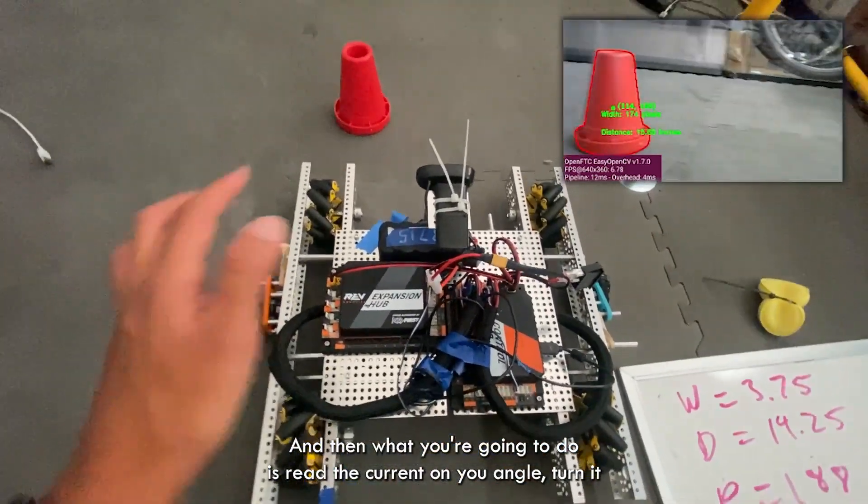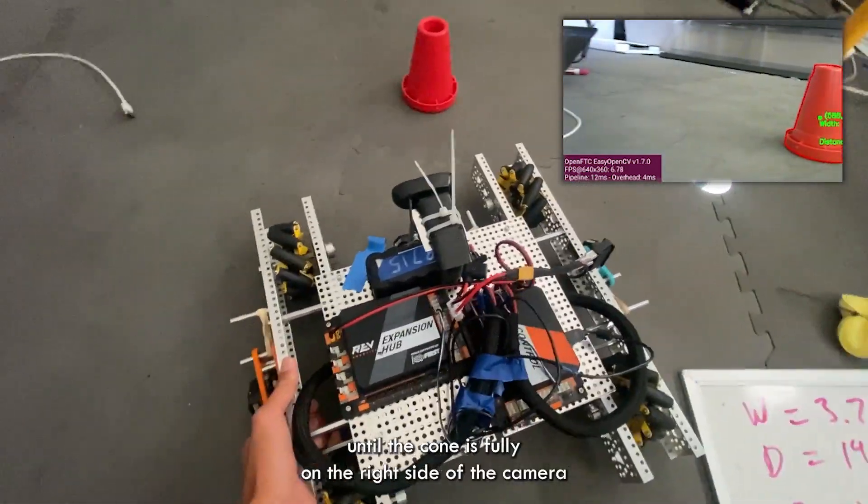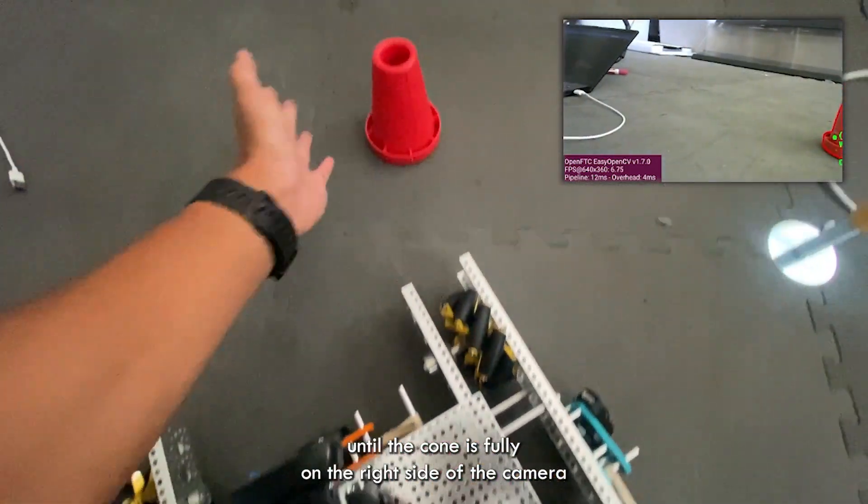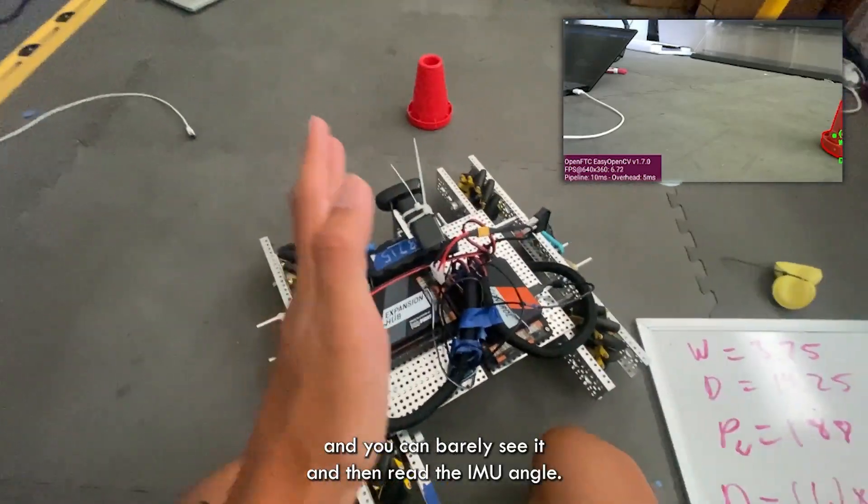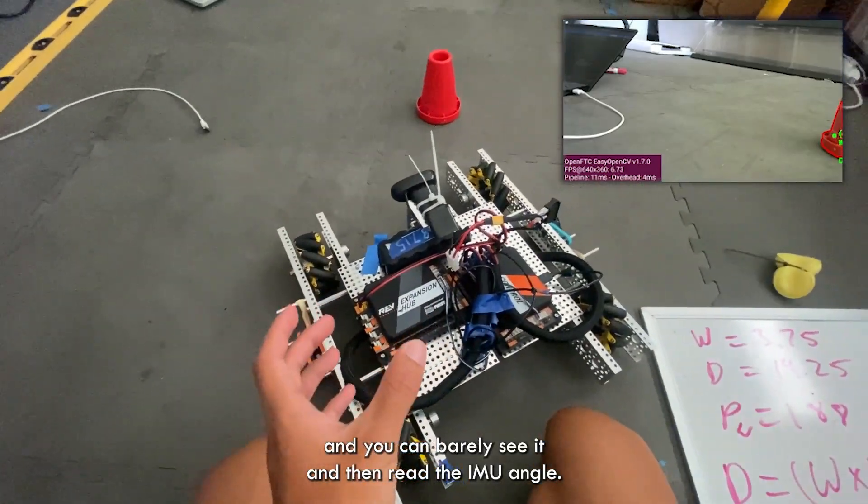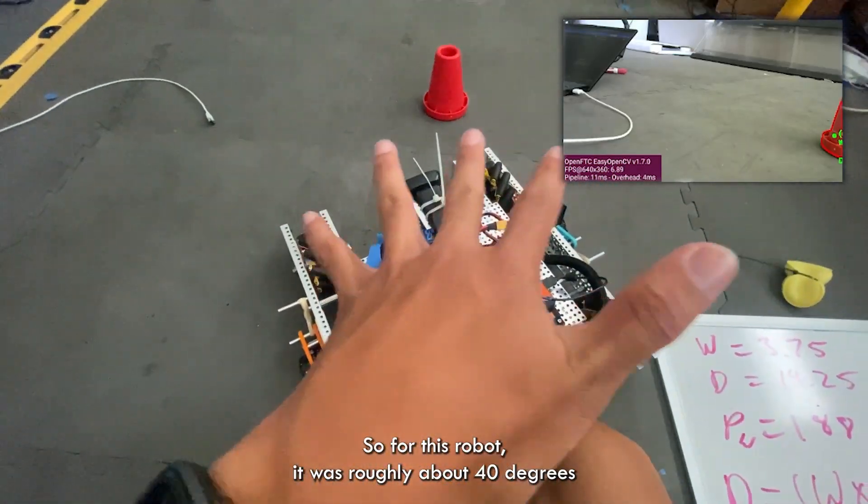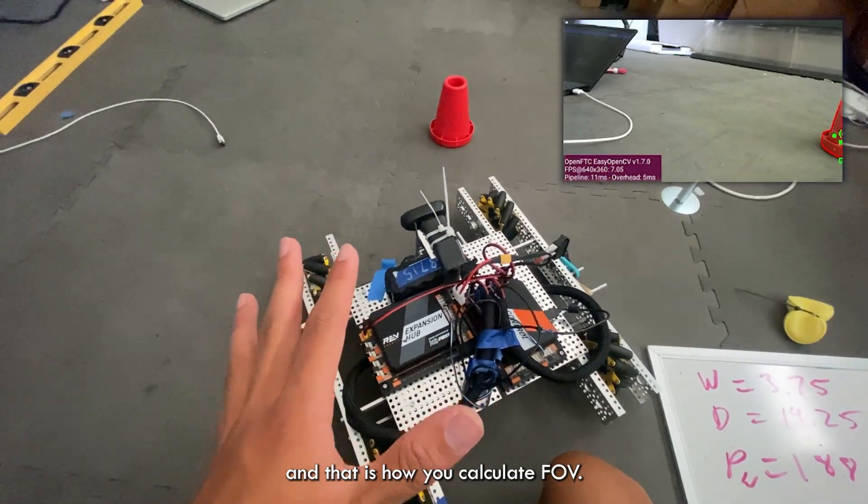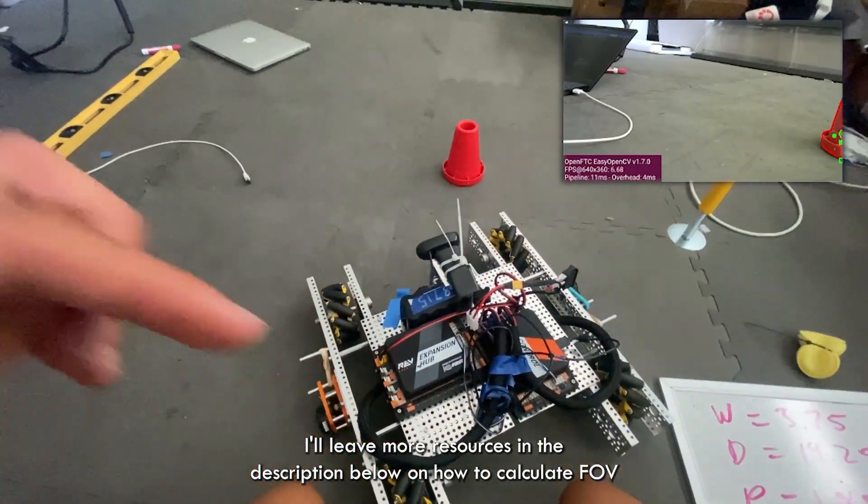And then read the IMU angle. So for this robot it was roughly about 40 degrees and that is how you calculate FOV. I'll leave more resources in the description below on how to calculate FOV.